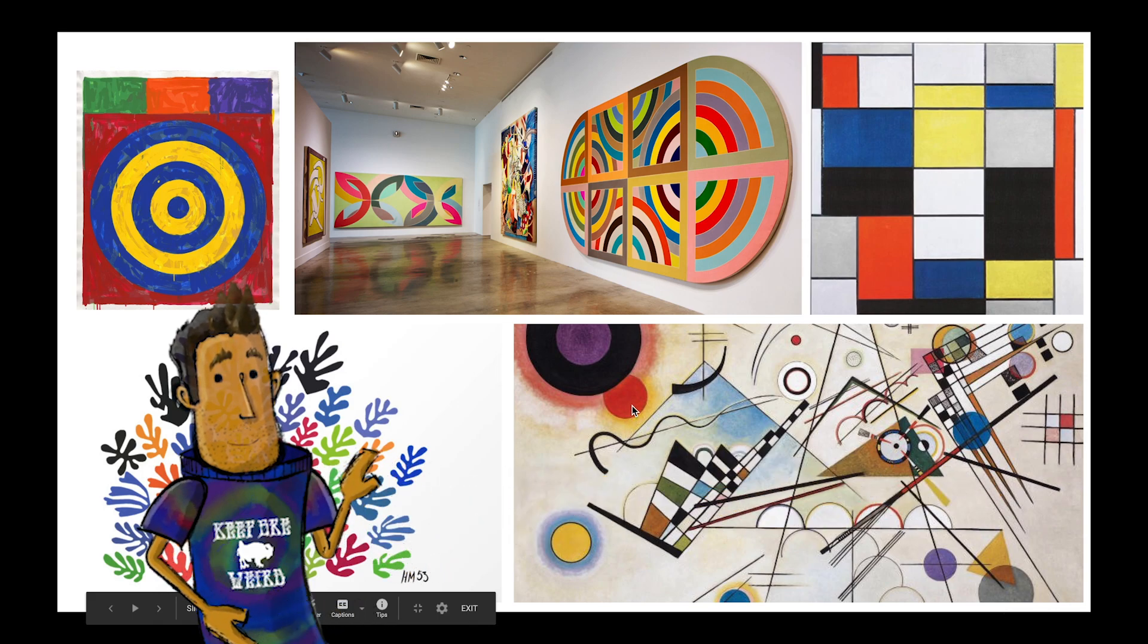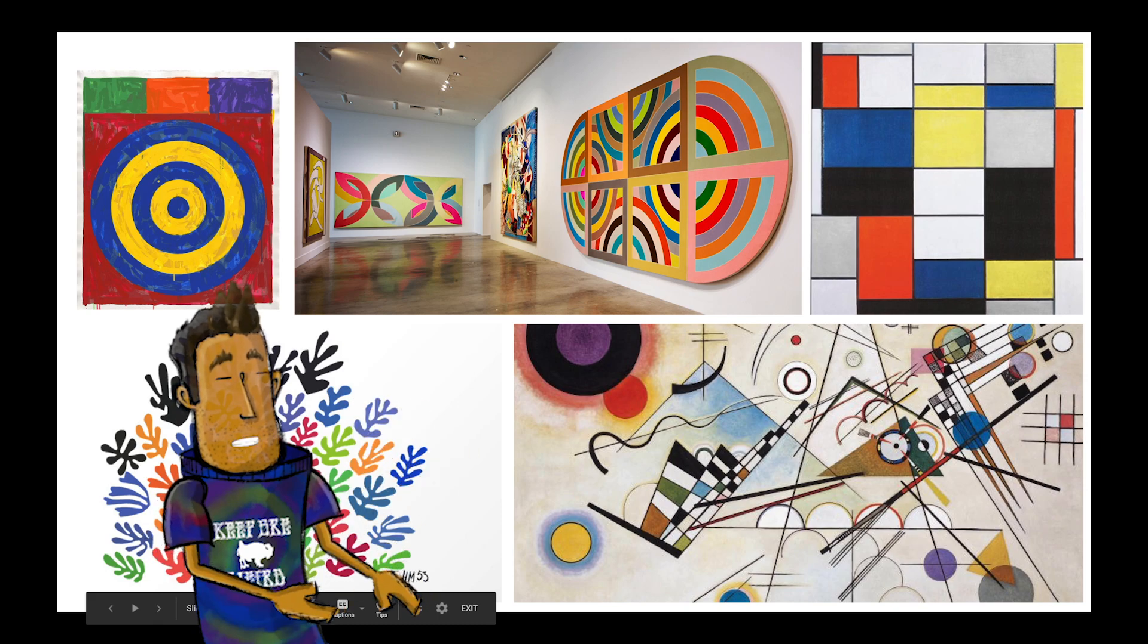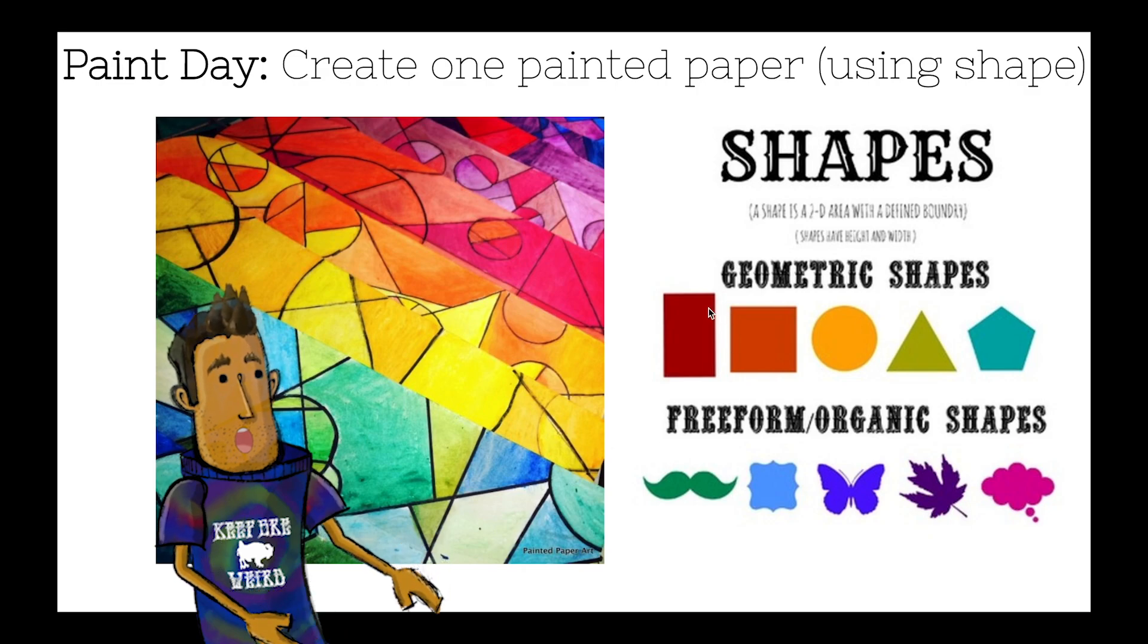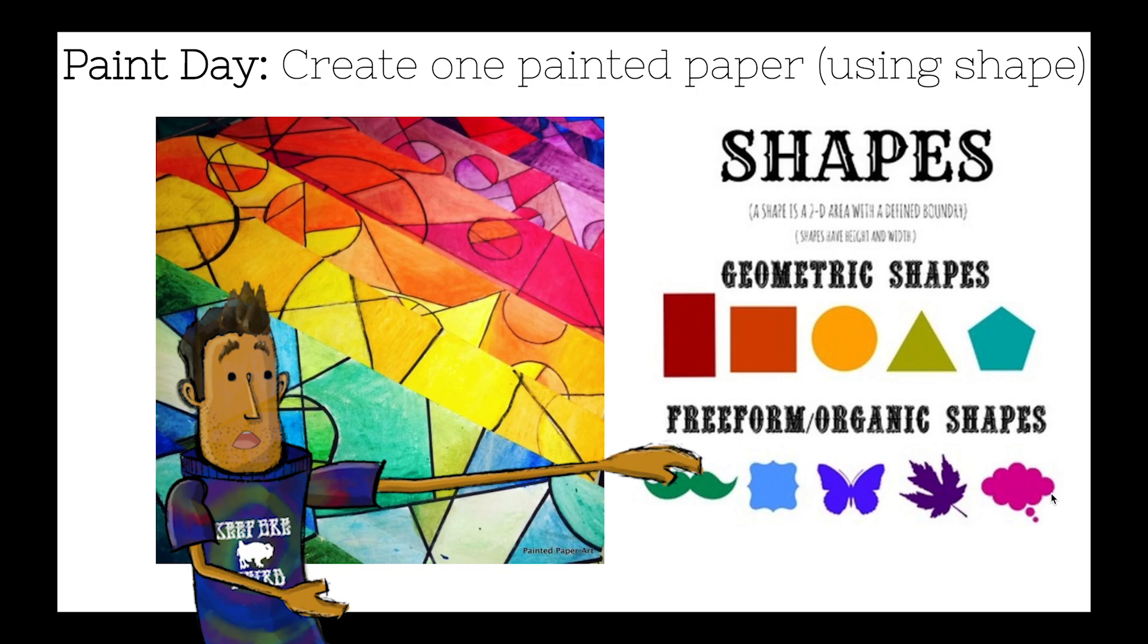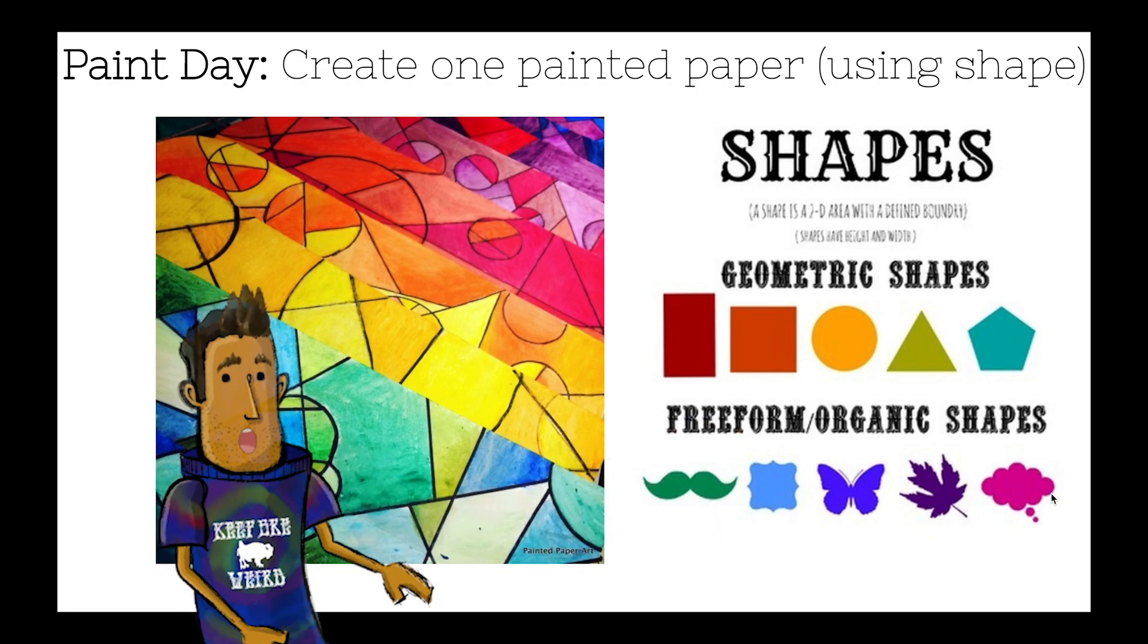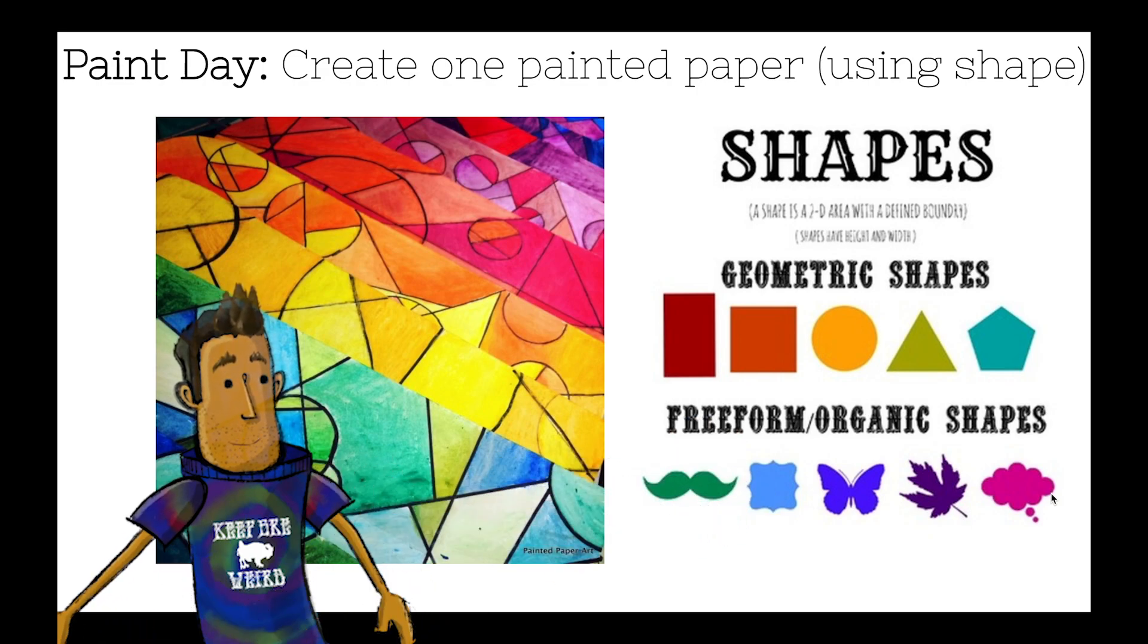And then Matisse, Henri Matisse, also used a lot of free-form or organic shapes. So, let's talk about what those are. You're used to learning about shapes in math all the time, but in art we also talk about free-form or organic shapes. Those are shapes that you find in nature. We're going to be doing both and studying both of these.